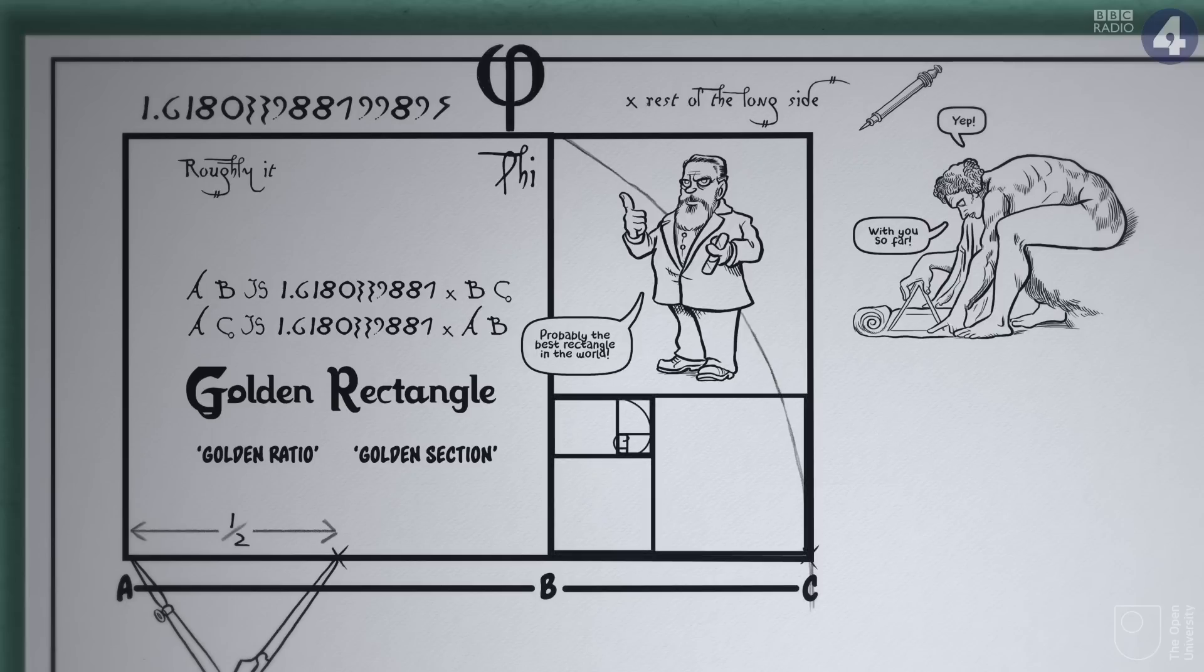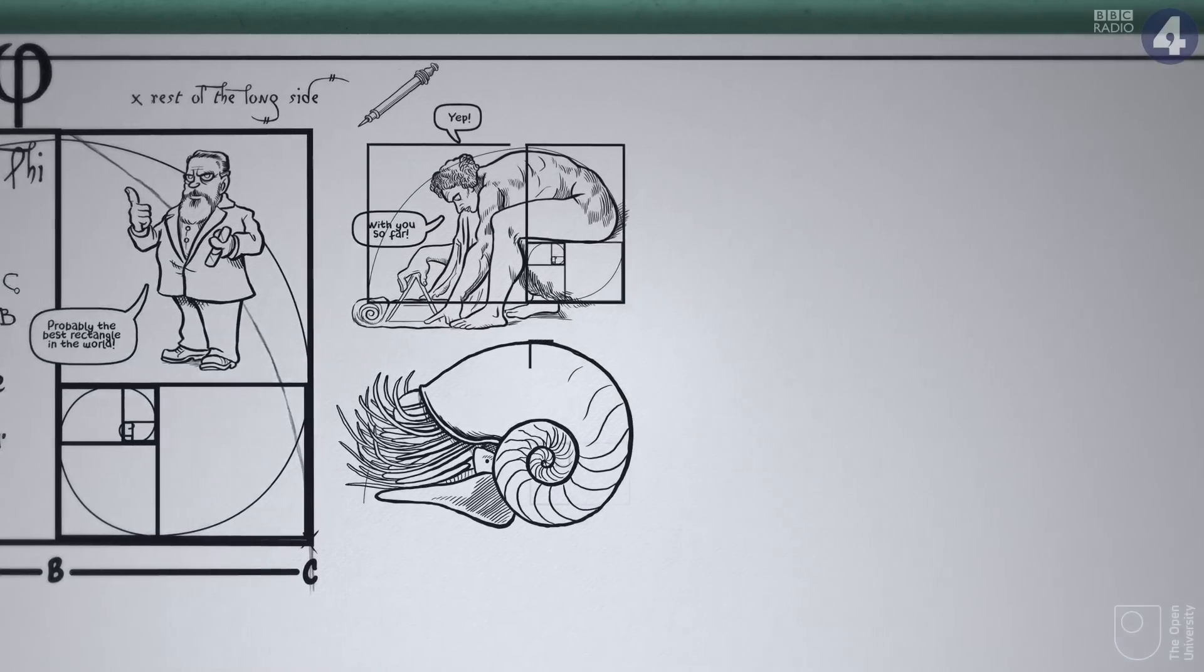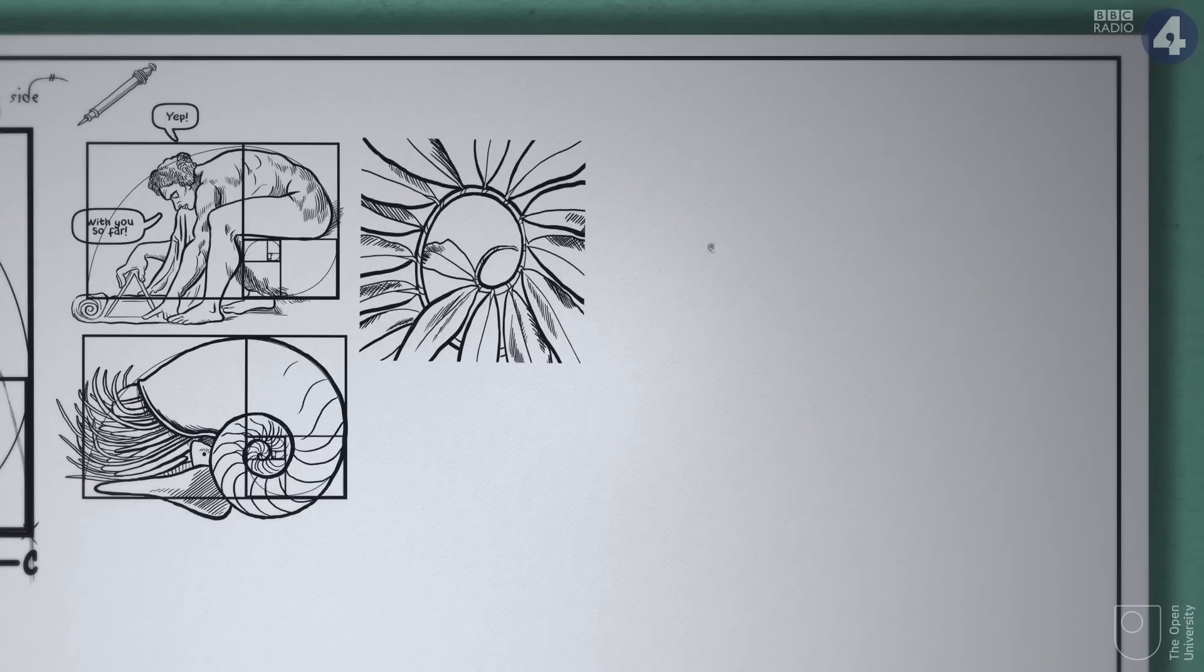If you join up the dots, you get a spiral that is very similar to a nautilus shell. It's a pattern that recurs in many plants and animals.